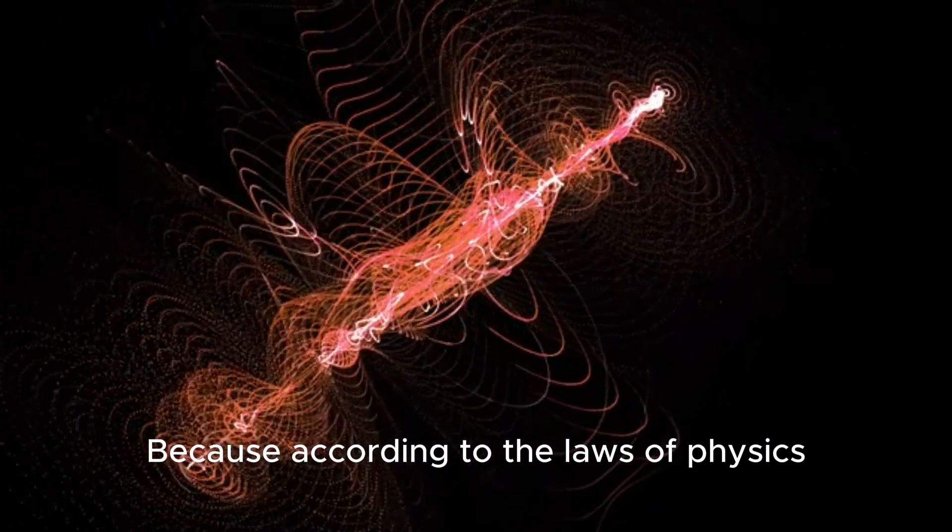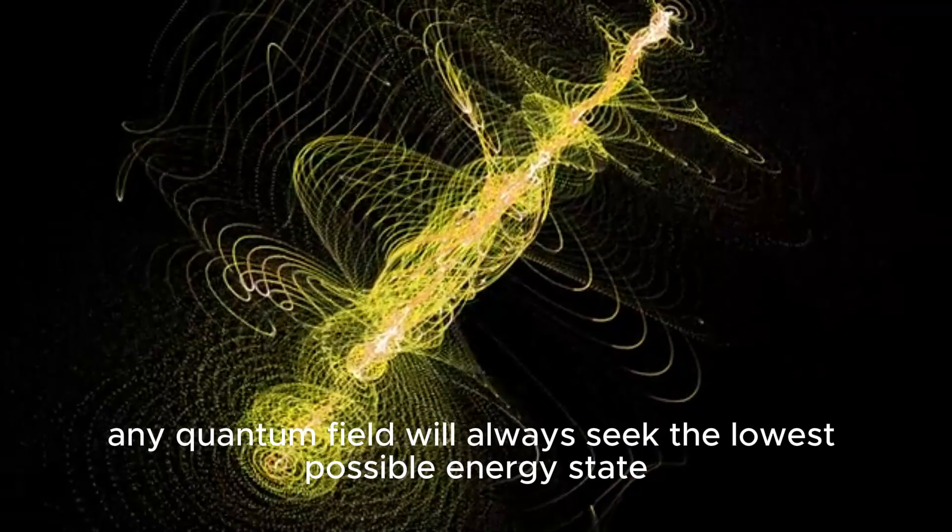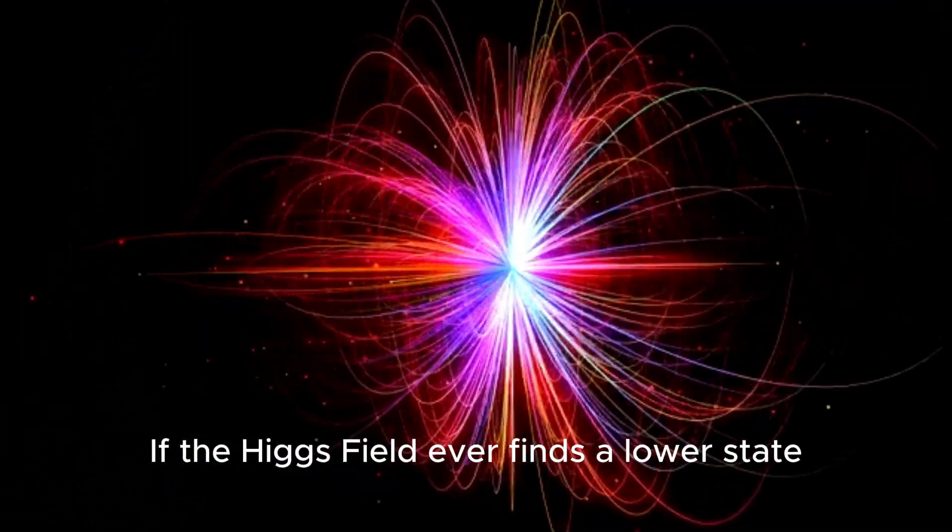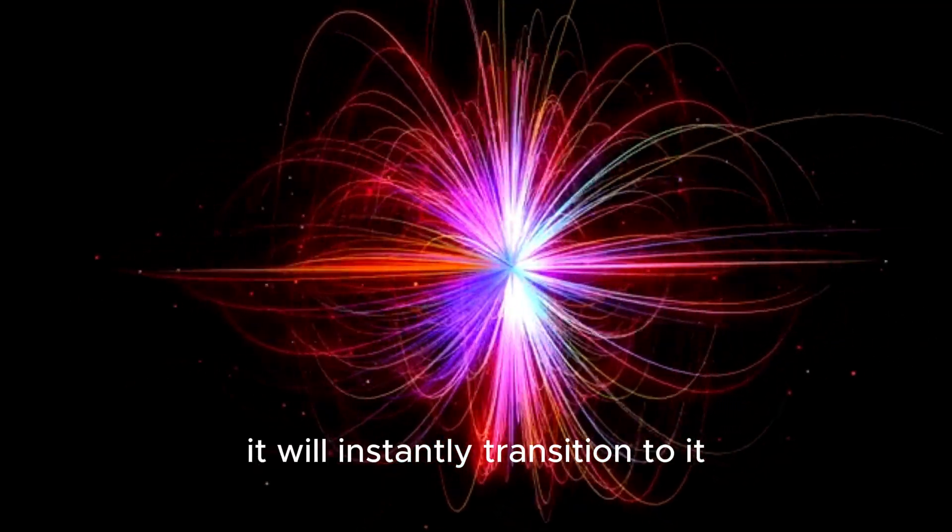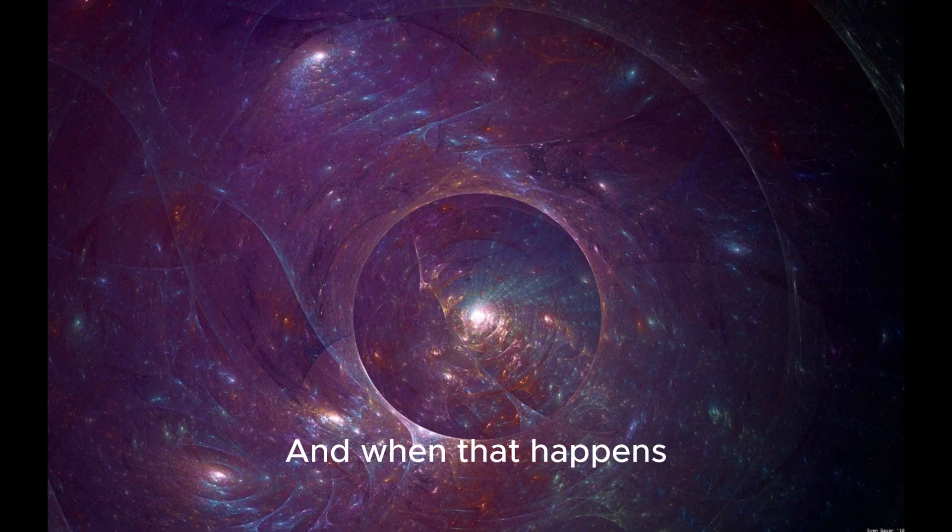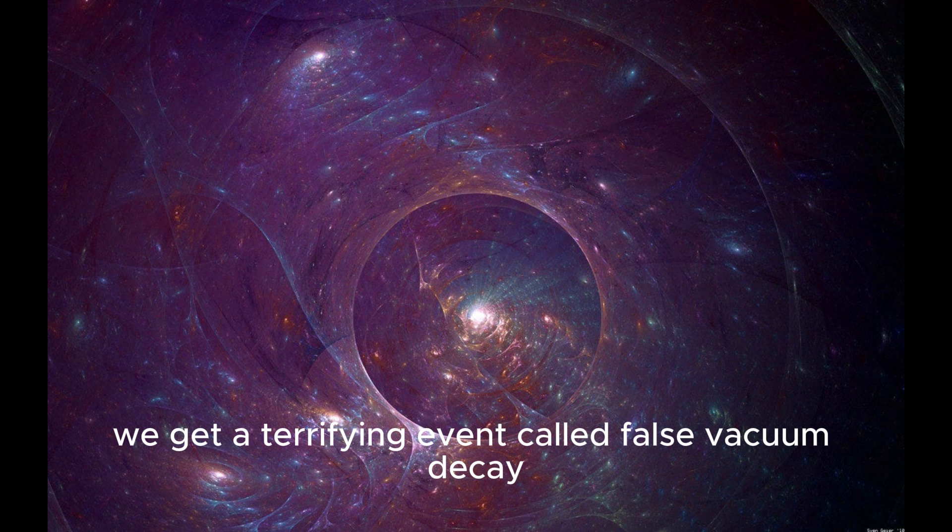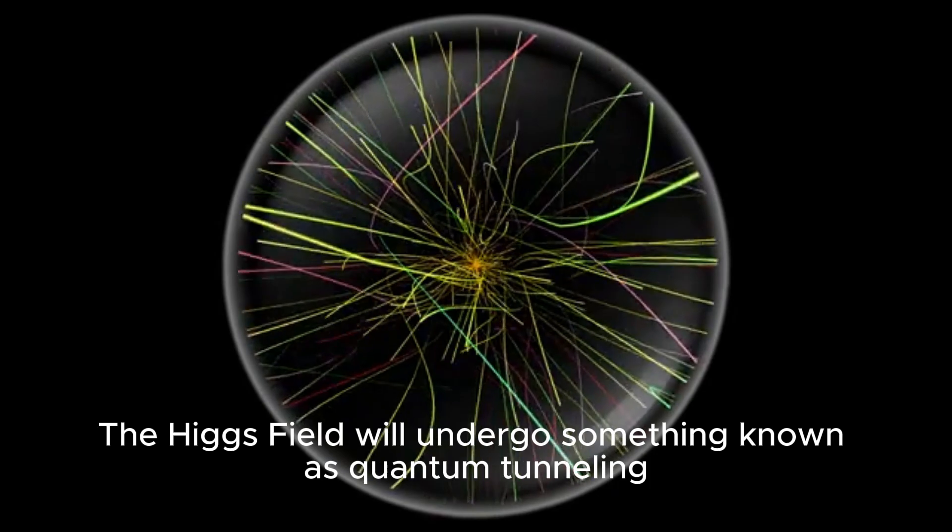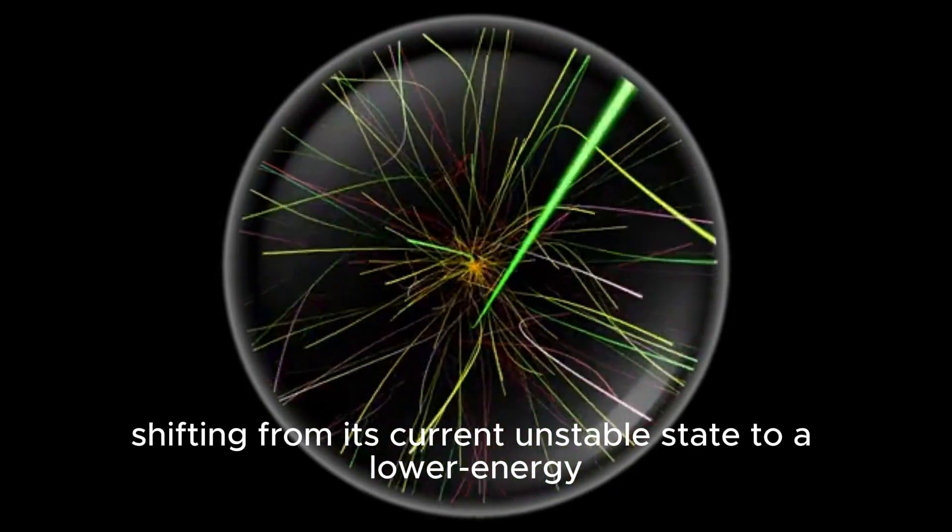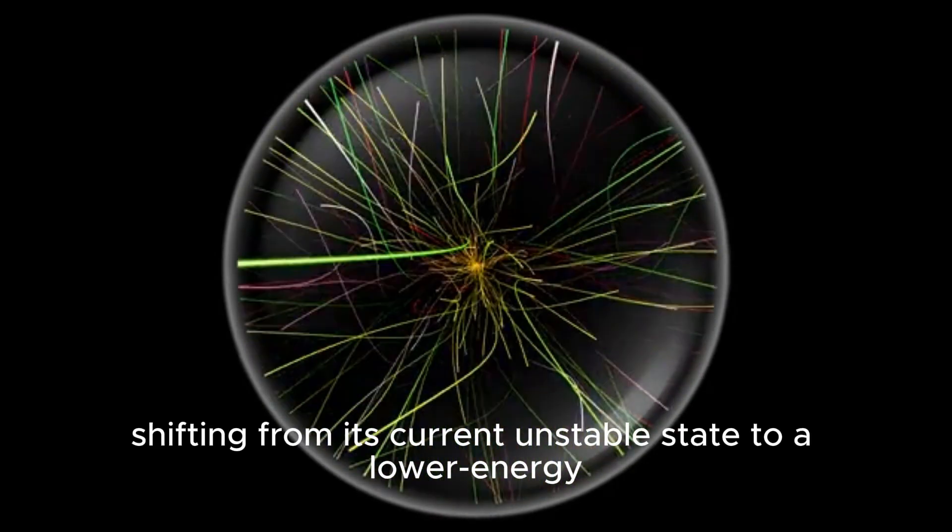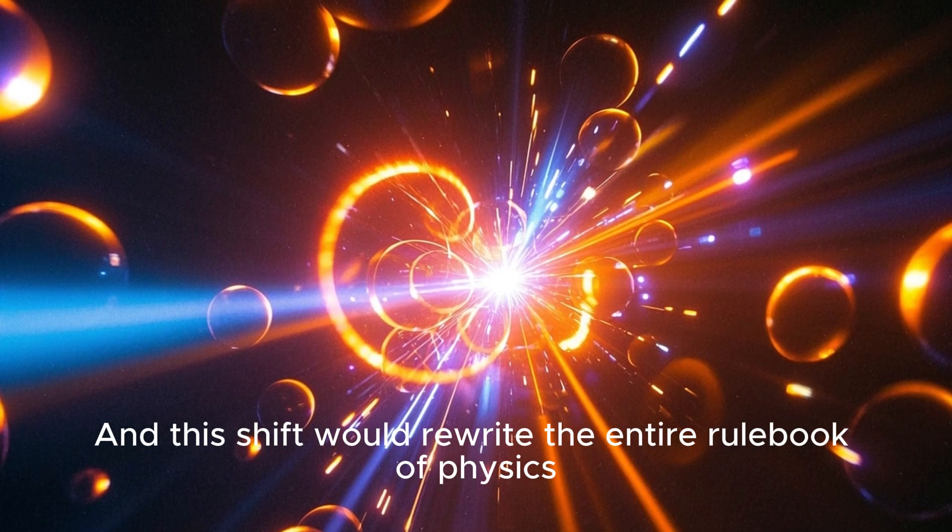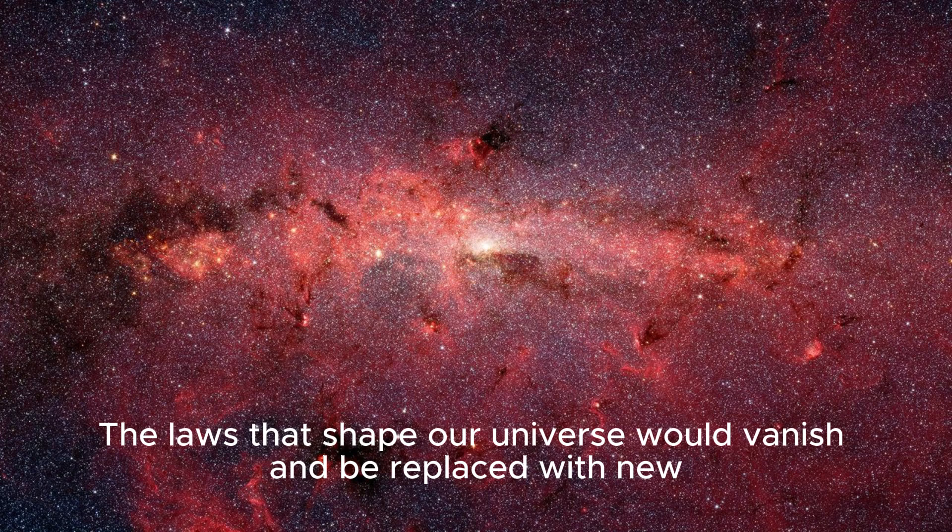Because according to the laws of physics, any quantum field will always seek the lowest possible energy state. If the Higgs field ever finds a lower state, it will instantly transition to it. And when that happens, we get a terrifying event called false vacuum decay. The Higgs field will undergo something known as quantum tunneling, shifting from its current unstable state to a lower energy, more stable one. And this shift would rewrite the entire rulebook of physics.